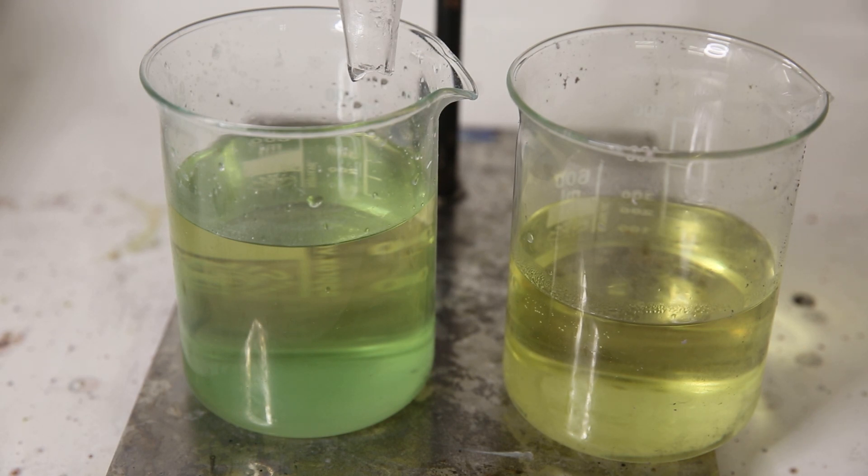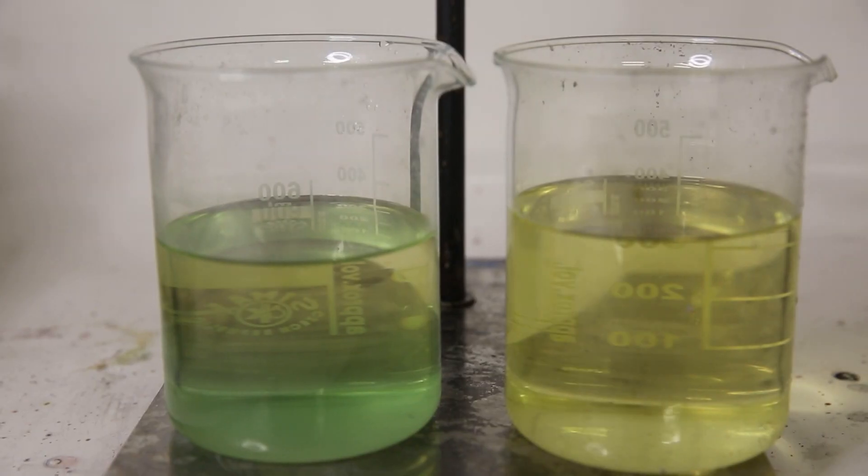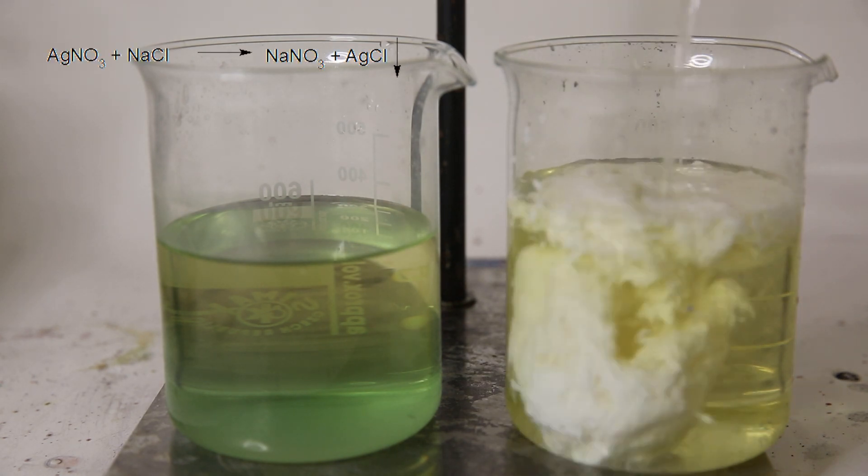In the next step, I will be converting silver nitrate to silver chloride by adding a saturated sodium chloride solution to the beaker. Since silver chloride is extremely insoluble in water, it will precipitate out immediately and we can see a white fluffy cloud of silver chloride forming.